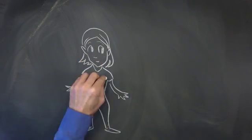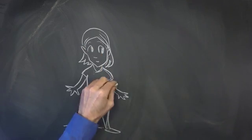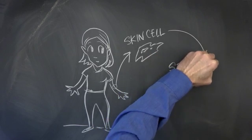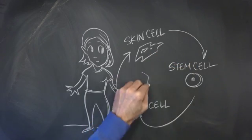Recently there have been major technological breakthroughs that allow us to take an adult cell such as a skin or hair cell, turn it back into a stem cell and then from that stem cell differentiate it into another type of cell.